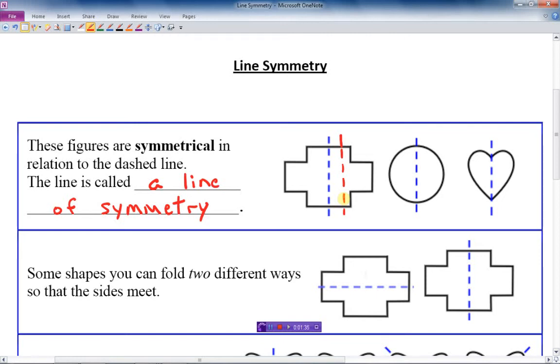We go on to the next couple of shapes here. Some shapes can fold two different ways so the sides meet. In other words, they have two lines of symmetry, and that's the way it is with this case here.